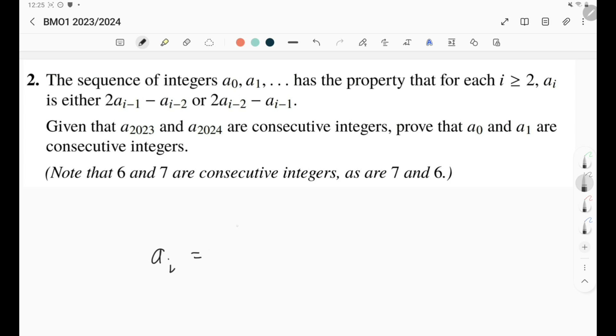So that means we have a recursion here, where a_i is either 2a_{i-1} minus a_{i-2}, or it is 2a_{i-2} minus a_{i-1}. Of course, first we have a_0, a_1, but then for a_2 and the terms after it, this is why they told us i is greater than or equal to 2, we can use this formula to find the values.